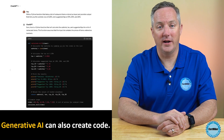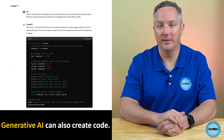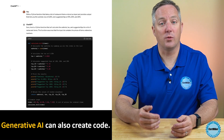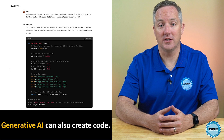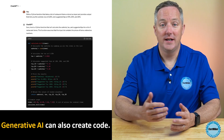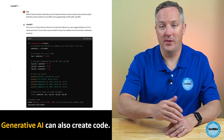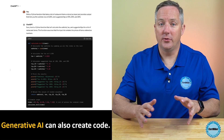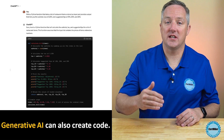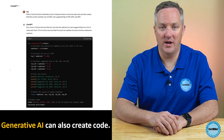Another groundbreaking application of generative AI is in the realm of coding and software development. AI systems can now understand programming languages and assist in writing and optimizing code. They can automatically generate boilerplate code, detect and suggest fixes for bugs, and even help in developing complex algorithms. This not only speeds up the development process, but also makes it more accessible, allowing people with less experience to contribute to software projects.